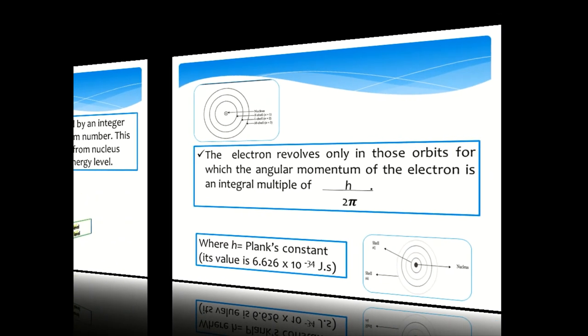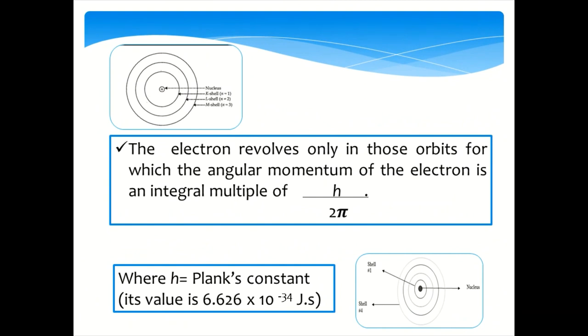The electron revolves only in those orbits for which the angular momentum of the electron is an integral multiple of h by 2π.